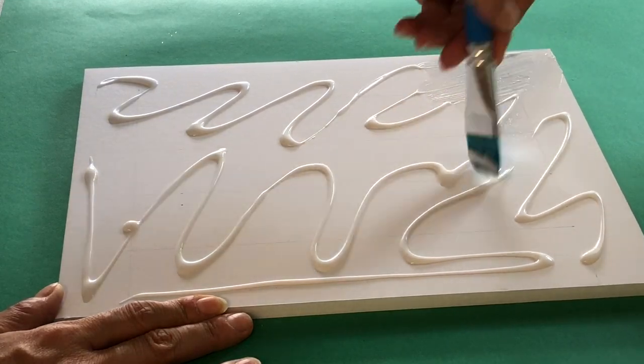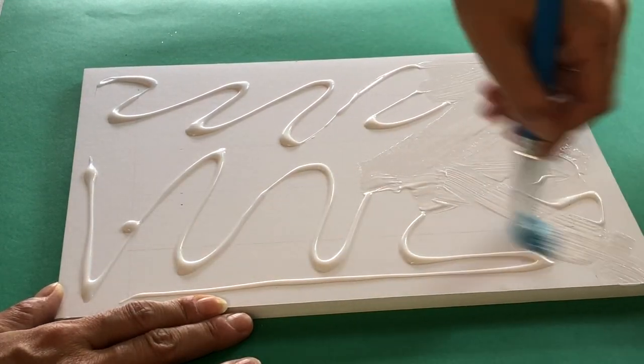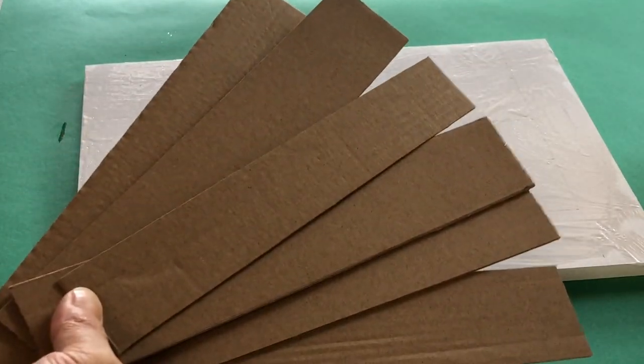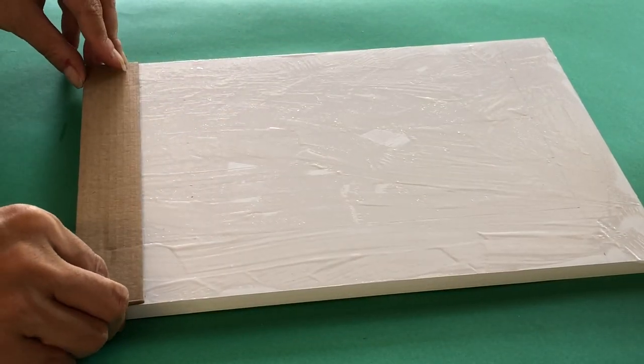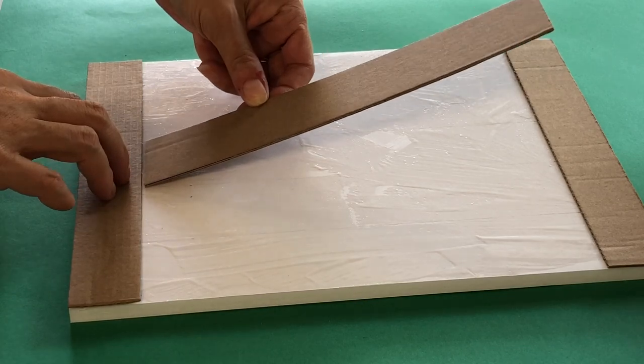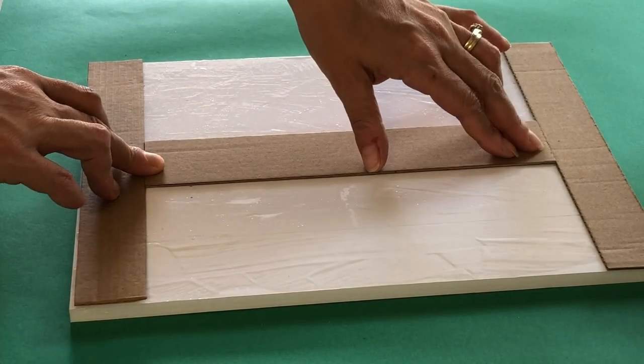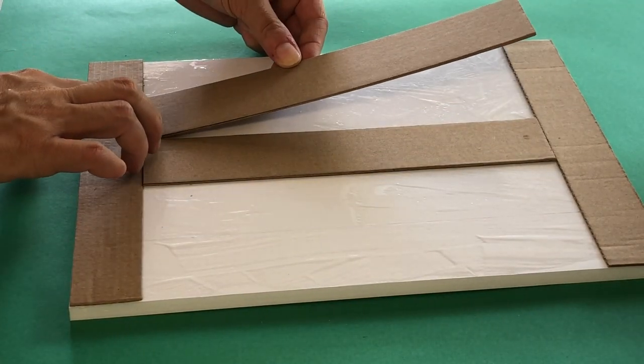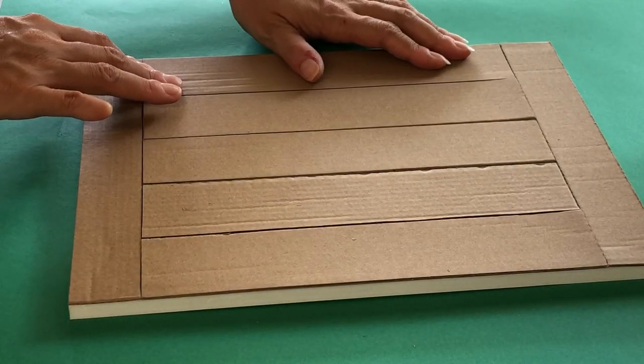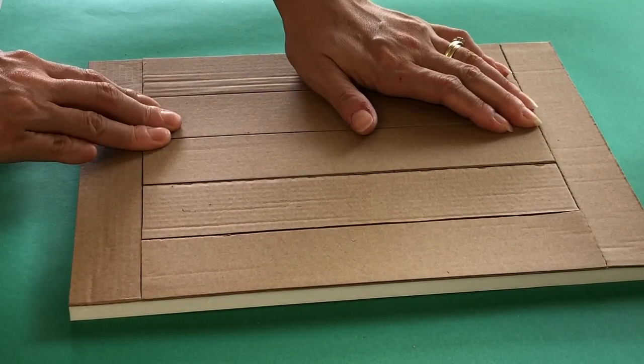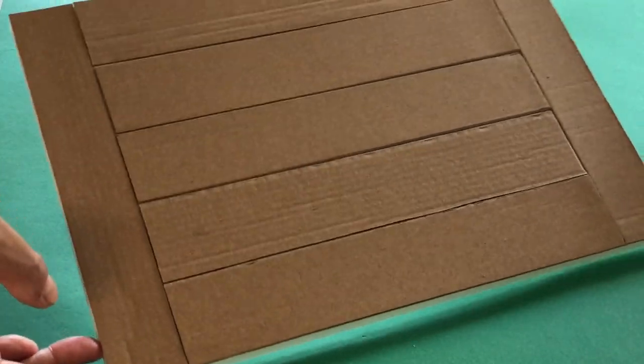Cut wide strips of cardboard to add detail. Place a vertical strip against both the left and right edge. Next put a longer strip in the middle then work outward to fill the tabletop. Let the glue dry then paint a dark brown.